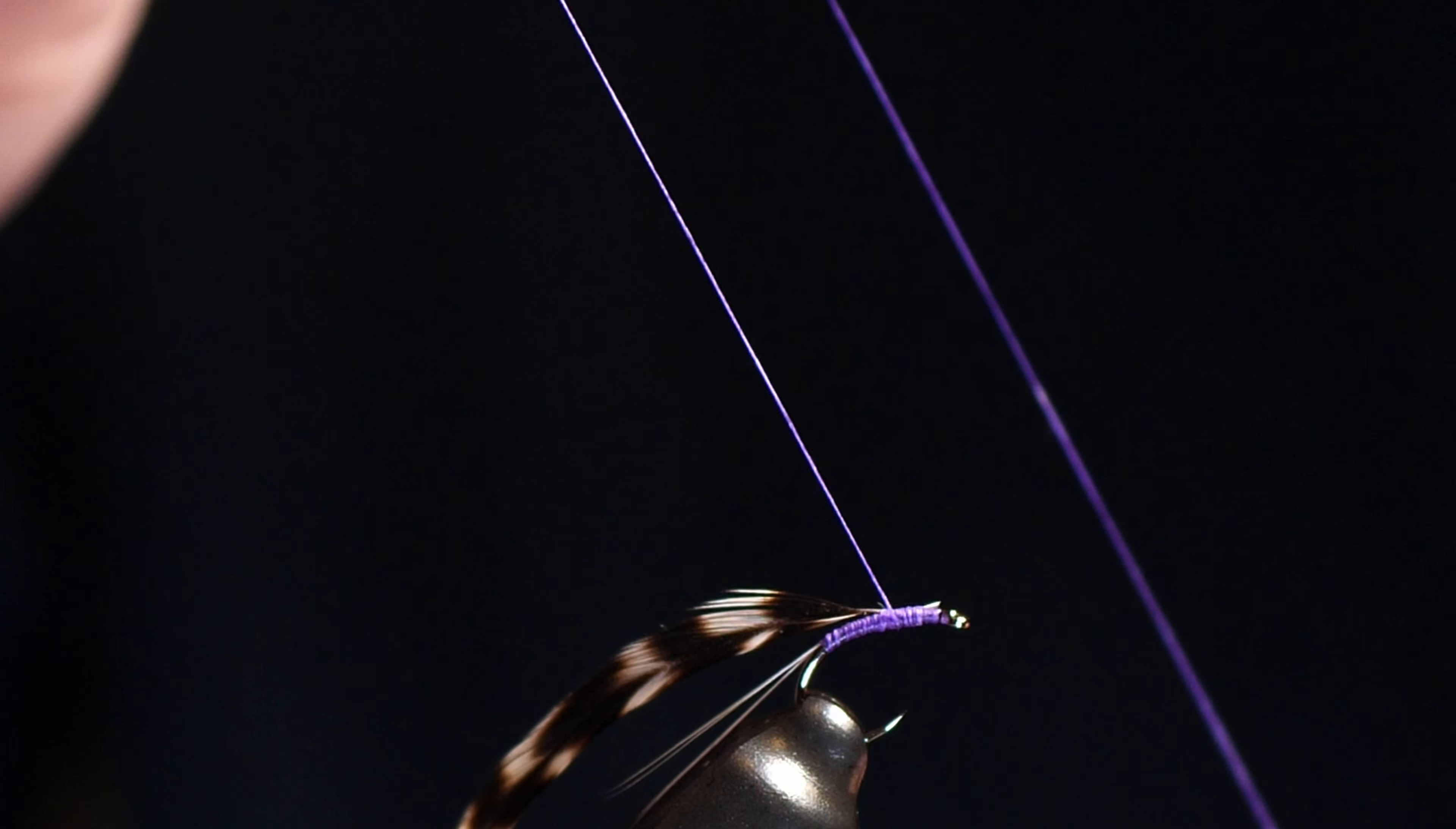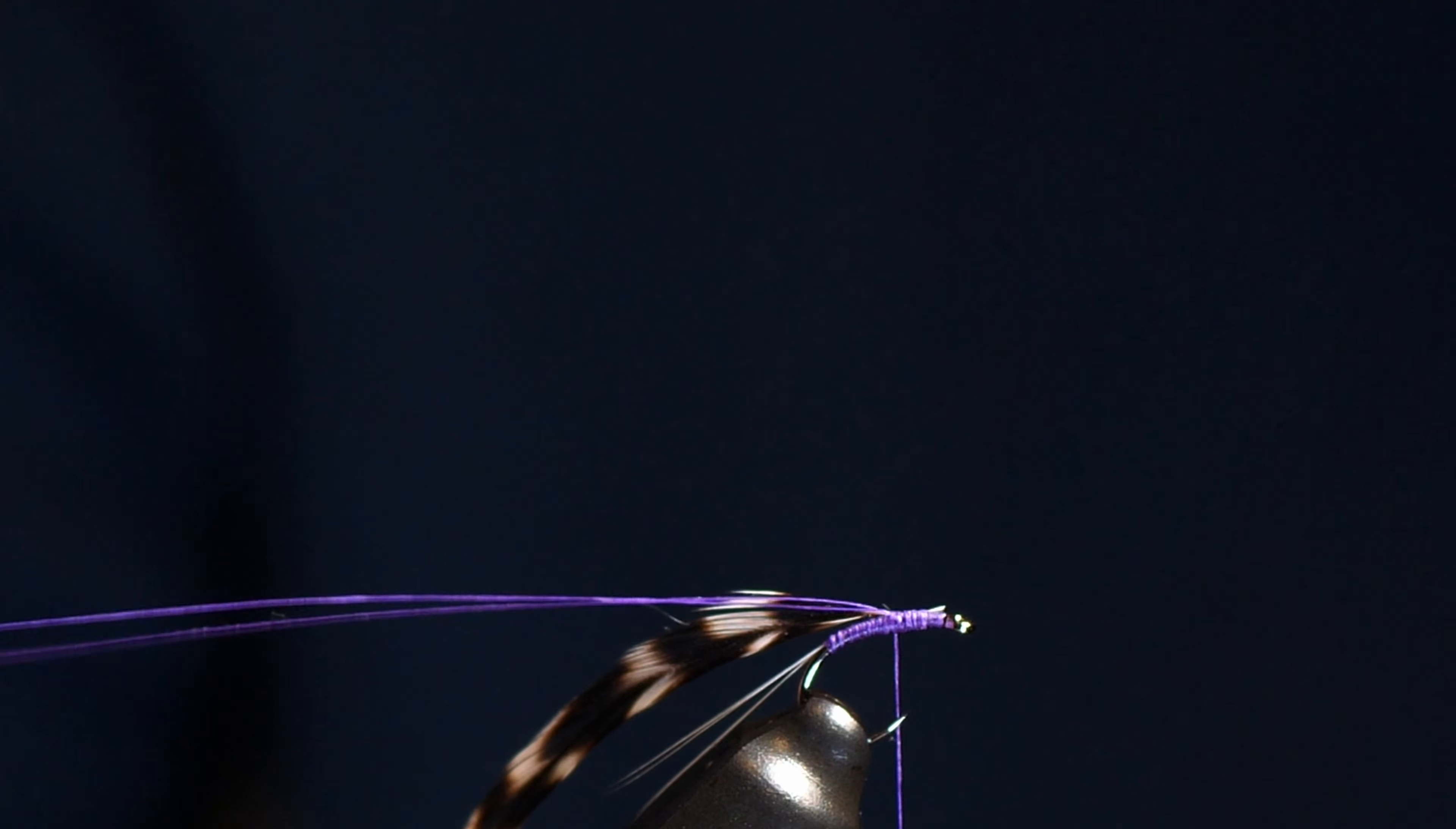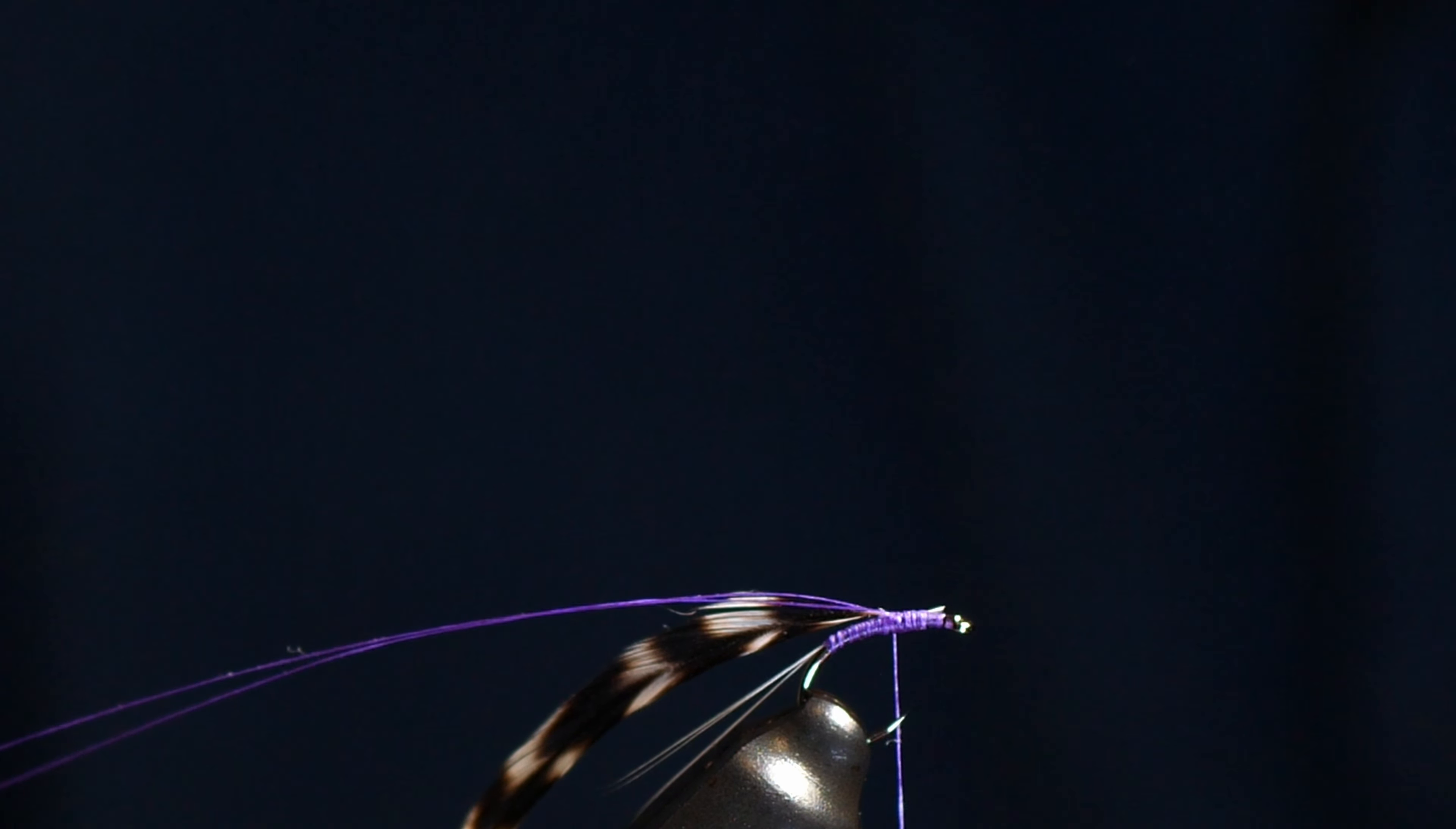But if you want to use some cheap jack hackles unfortunately it won't work. I've just tied a loop, secured a loop of the tying thread. Now if you use virtually any of the cheap saddle hackles and you try and wrap it around this thin thread you'll find they'll snap. There may be a company that does a feather that won't snap but I haven't found it.